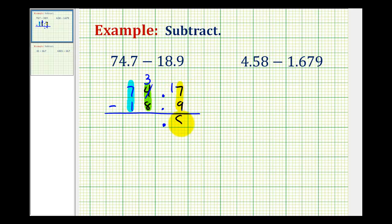Seventeen minus nine is equal to eight, and then here we have to borrow again, so we'll change the seven to a six, this becomes a thirteen, thirteen minus eight is equal to five. Then we have six minus one, which is equal to five. So the difference is fifty-five point eight, or fifty-five and eight tenths.